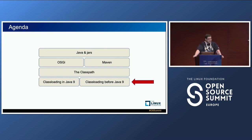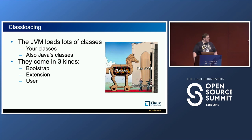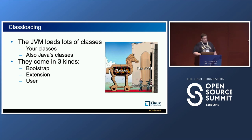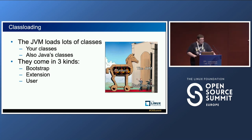We need to acknowledge a split in Java — what happened before Java 9 and what happened after. What is class loading? When you have a class that appears on the classpath, someone has to load it into the Java Virtual Machine so you can use it — that's where class loaders come in. There are three class loaders: the Bootstrap Loader, the Extension Class Loader, and the User or System Class Loader. Each one handles a slightly different kind of loading.